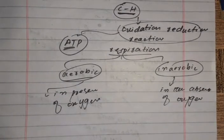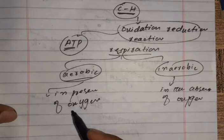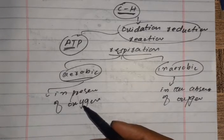Organisms get the oxygen needed for cellular respiration from their environment. They carry oxygen from the environment and provide it to their cells.